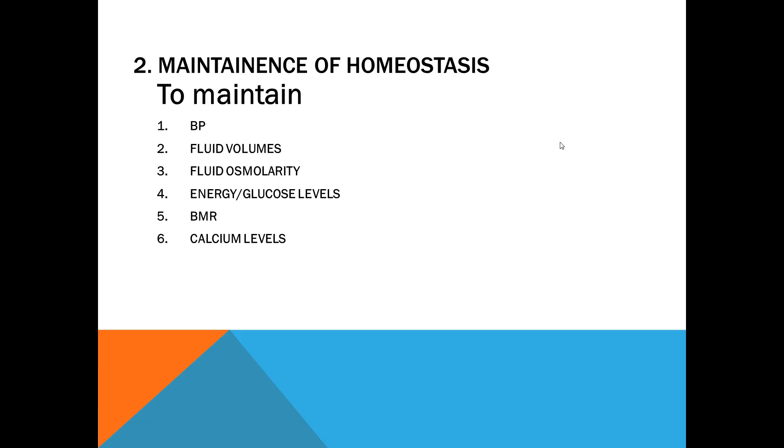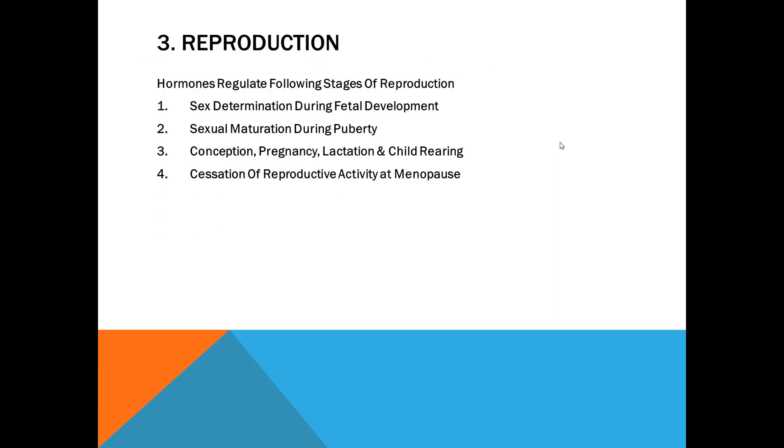Fifth is BMR—basal metabolic rate. This is maintained by thyroid hormones. And calcium levels—for calcium levels, hormones are like vitamin D, calcitonin, parathormone. They will act on specific target cells. Vitamin D acts on three target cells: GIT, kidney, and bones. So this knowledge is also very important—what is the target of the hormone.